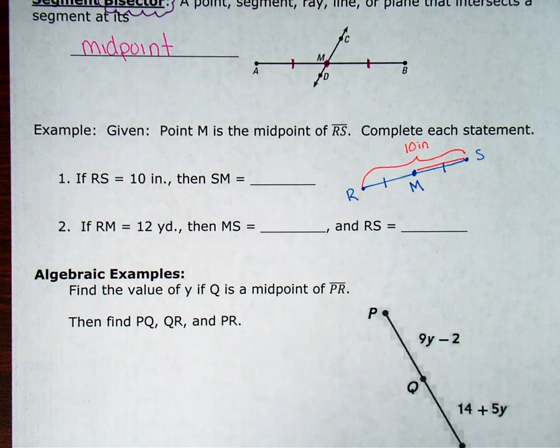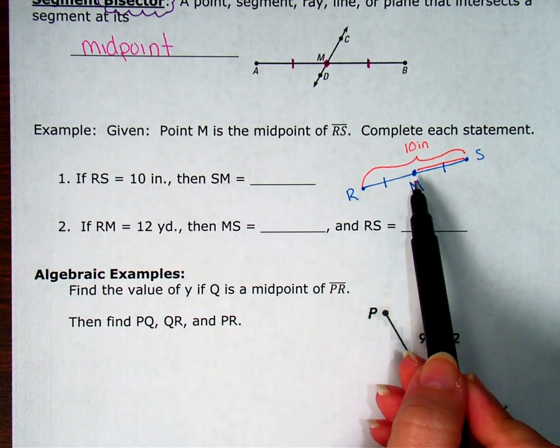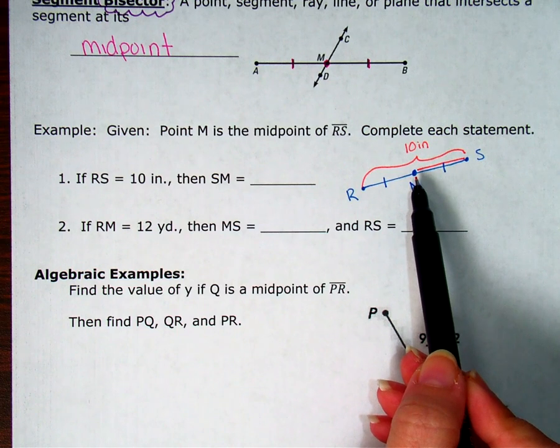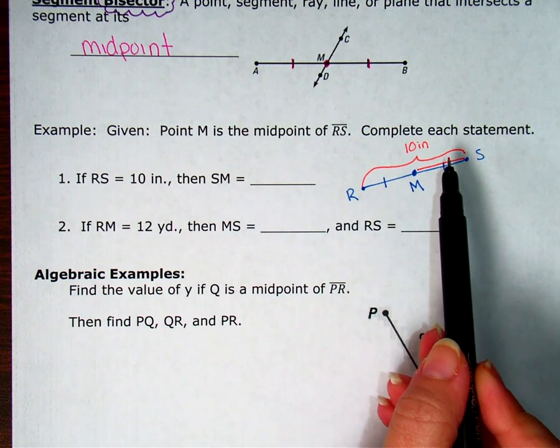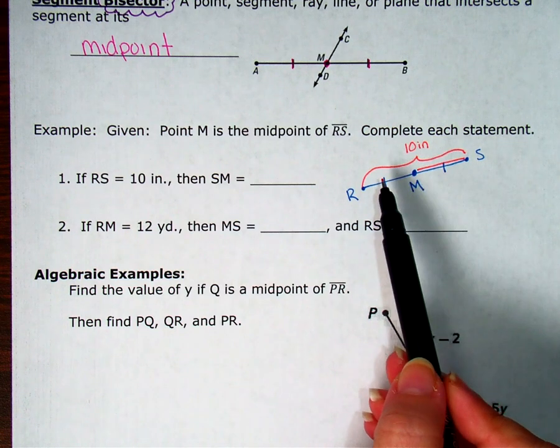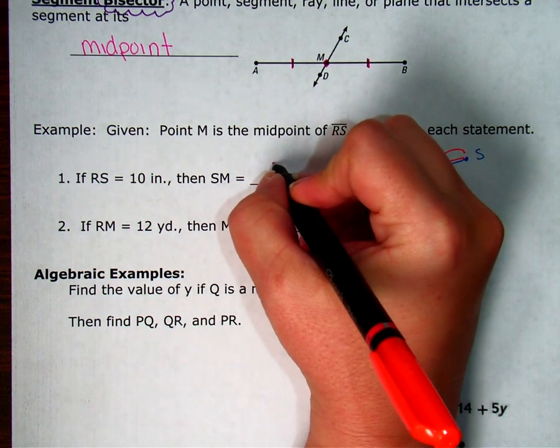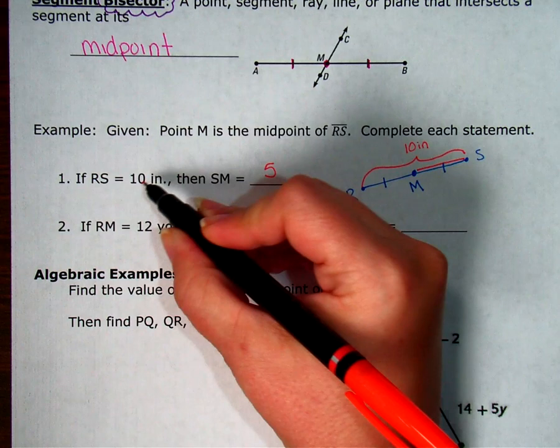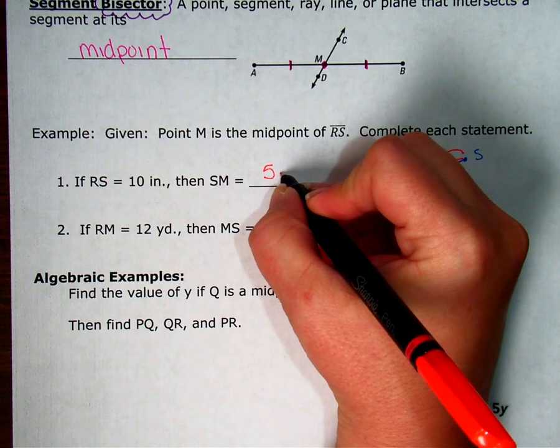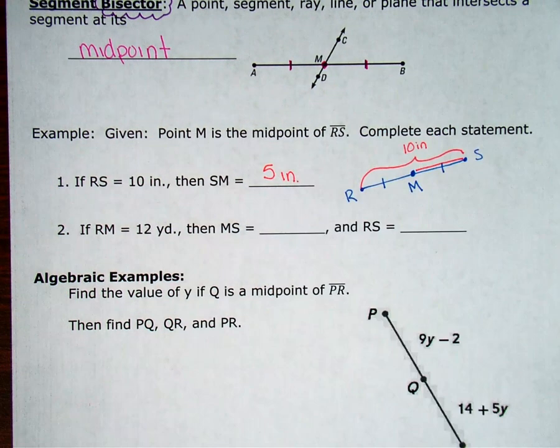Well, if the whole thing is 10 and I've got a midpoint, that means it's dividing it into two equal halves. I know each of these sides have to be the same. So they both have to be 5 because 5 plus 5 makes my 10. So 5. Make sure you use your units since I know I've got 10 inches. That means half of that is 5 inches.